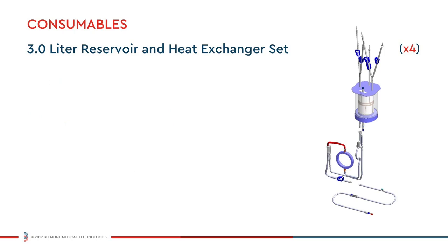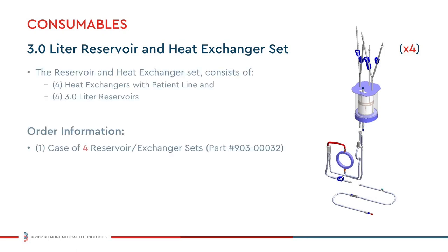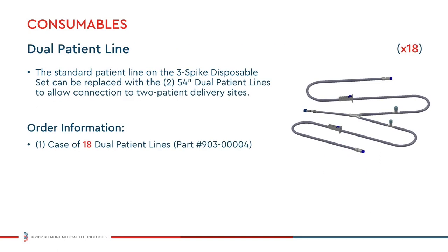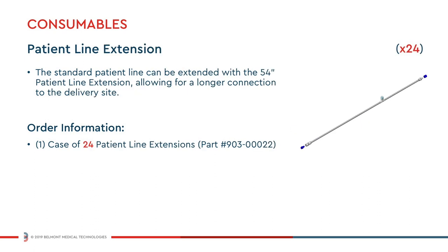The Belmont 3-L Disposable Set offers the convenience of ordering the 3-liter reservoir, heat exchanger set, and patient line in one simple kit. The Belmont 3-liter disposable set contains four reservoirs and four heat exchangers with patient lines per case. The Belmont dual patient line can be used in addition or replace the standard single 54-inch patient line with dual 54-inch lines, enabling connection to two patient delivery sites. The 54-inch Belmont patient line extension can be used to extend the standard patient line and is suitable for procedures that require longer connection to a delivery site.